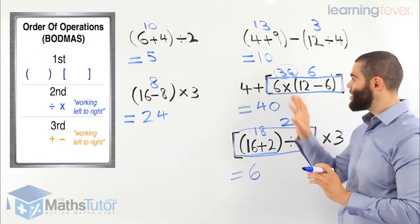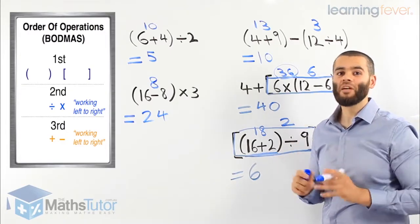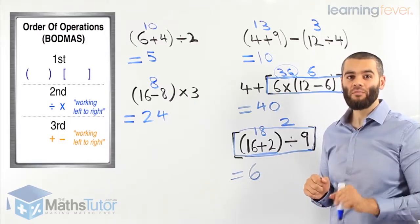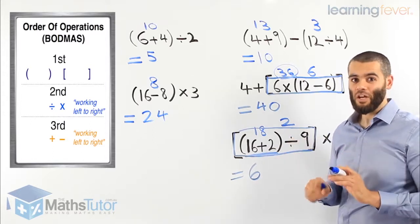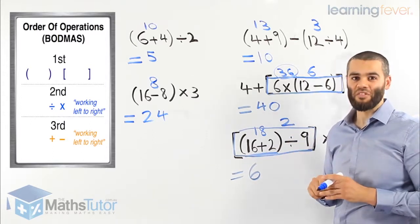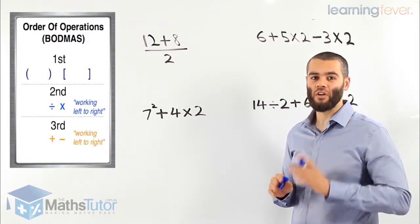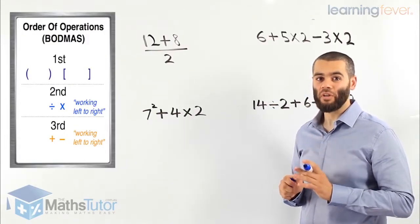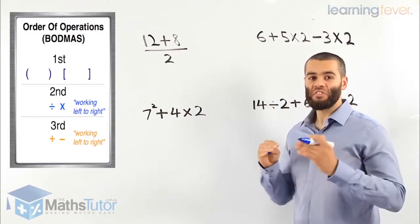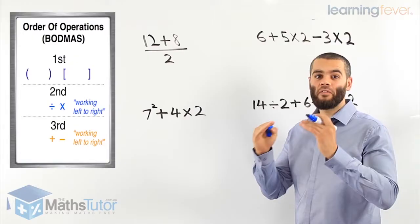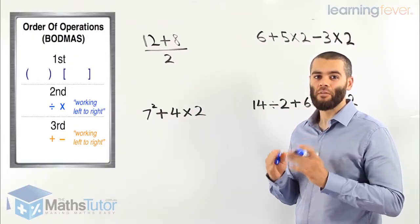So as you can see, very straightforward. I'd like to do some more examples — the more examples I do, the better and more confident you're going to become, and you'll notice this is easy. Let's do some more. Going through: we do the brackets first, then multiplication and division, then plus and minus.